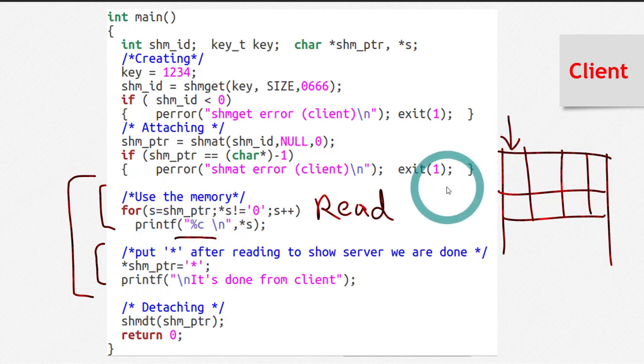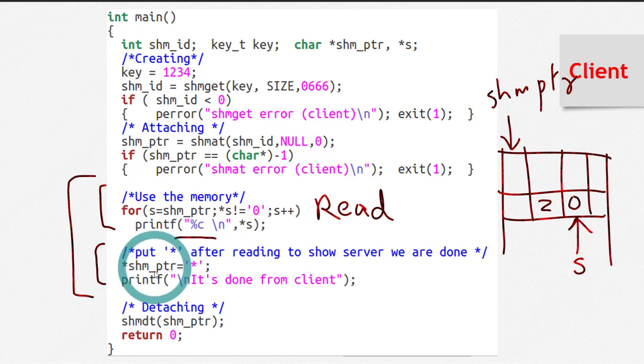the shared memory pointer SHMPTR is pointing towards the first index. And let's say this is zero, this is Z. So the s pointer is pointing towards the last index at this point in the code. So we are putting static at the first point. You can see here, we are pointing where SHMPTR is pointing. So it's pointing at the first index. So that's why we are putting static at the first index of the shared memory.